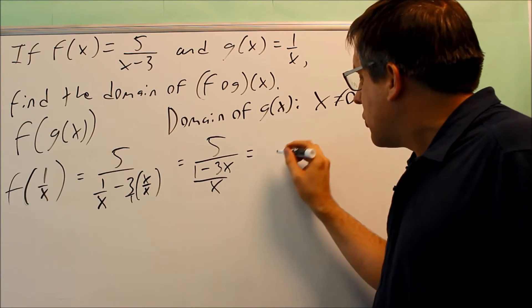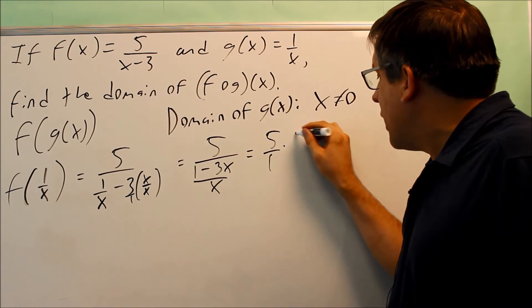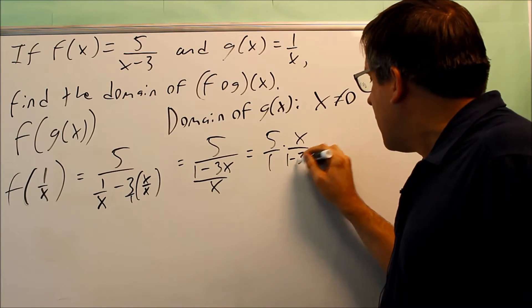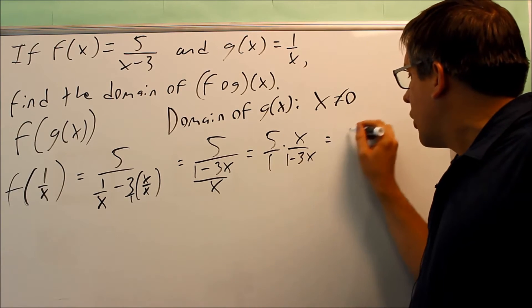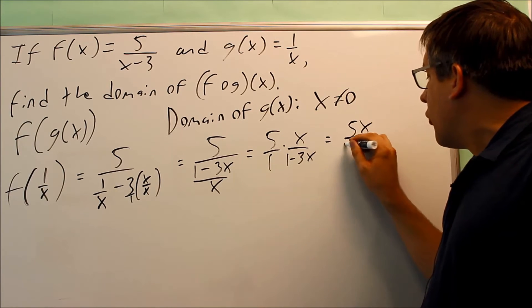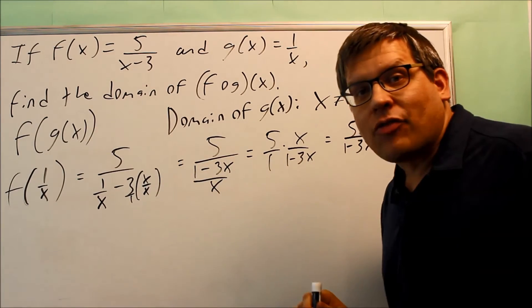Now I need to flip this. You take care of double fractions by multiplying the top fraction by the reciprocal of the bottom one. And we get x over 1 minus 3x. So therefore, you get 5x over 1 minus 3x. That's what you're going to get for f of g of x.